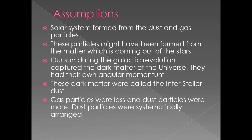The solar system formed from dust and gas particles that were present in space. These particles might have been formed from matter coming out of stars. This matter coming out of stars was called dark matter. Our Sun, during its galactic revolution, captured the dark matter of the universe.